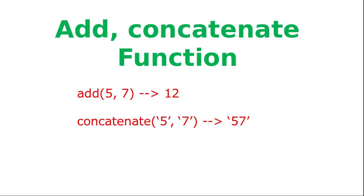Let's concentrate on two functions: add and concatenate. The add function takes two arguments, and concatenate also takes two arguments. In both cases we are passing the same data type — for add we pass two integers, and for concatenate we pass two strings — so there is no data type mismatch. Add produces 12, and concatenate appends the second string after the first, treating 5 and 7 as strings.